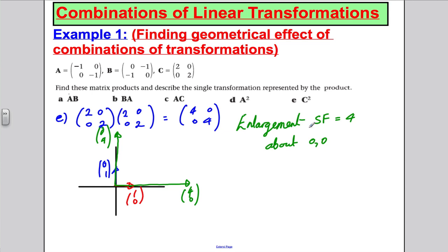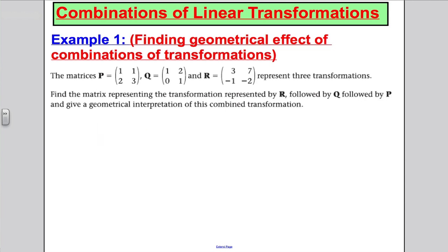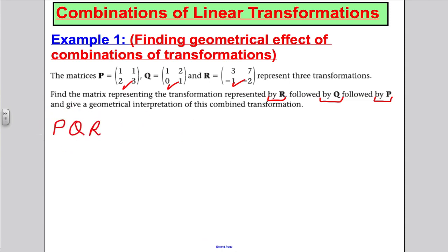Now I'd encourage you to try the next question yourself. Pause the video and see if you can work out the combined transformations of P, Q, and R. The question gives three transformations P, Q, R and asks us to find the matrix representing R done first, then Q, then P — which means we multiply P × Q × R in that order.